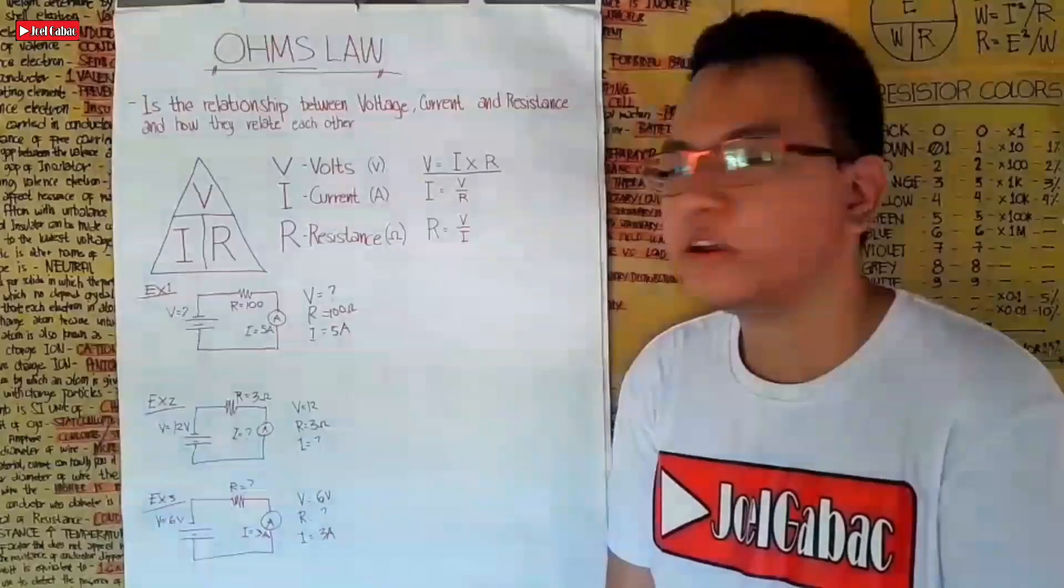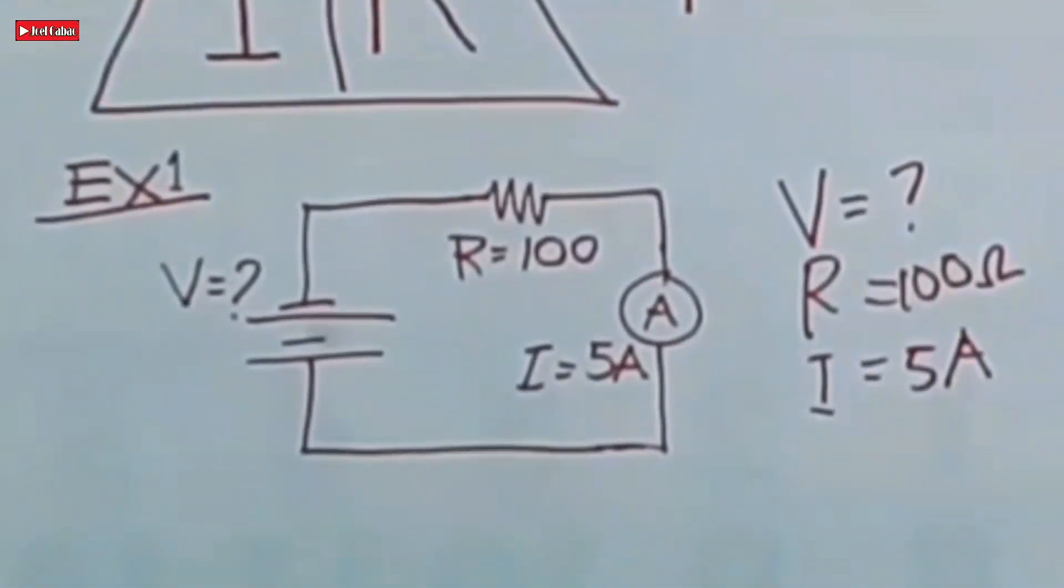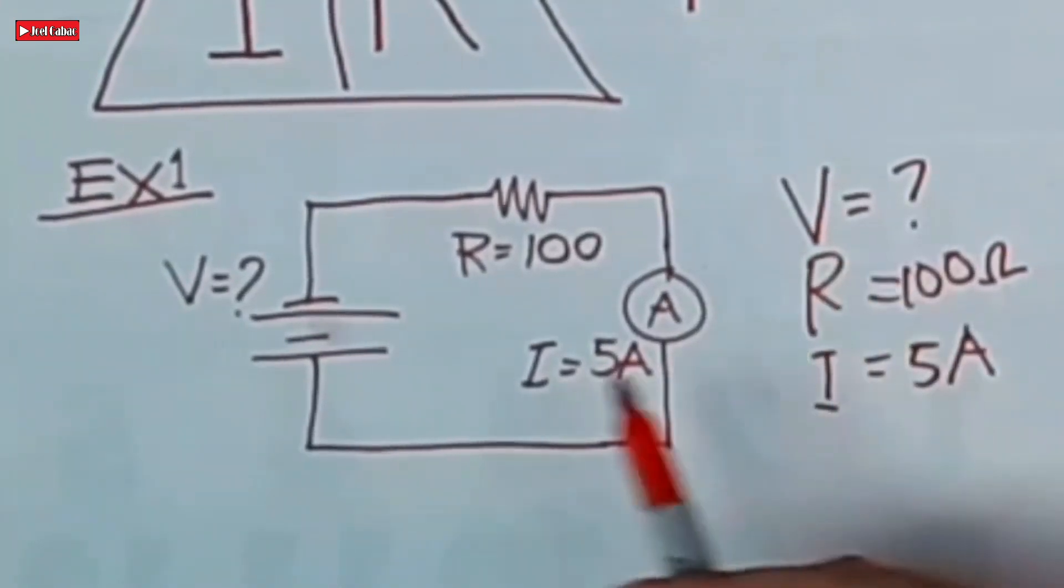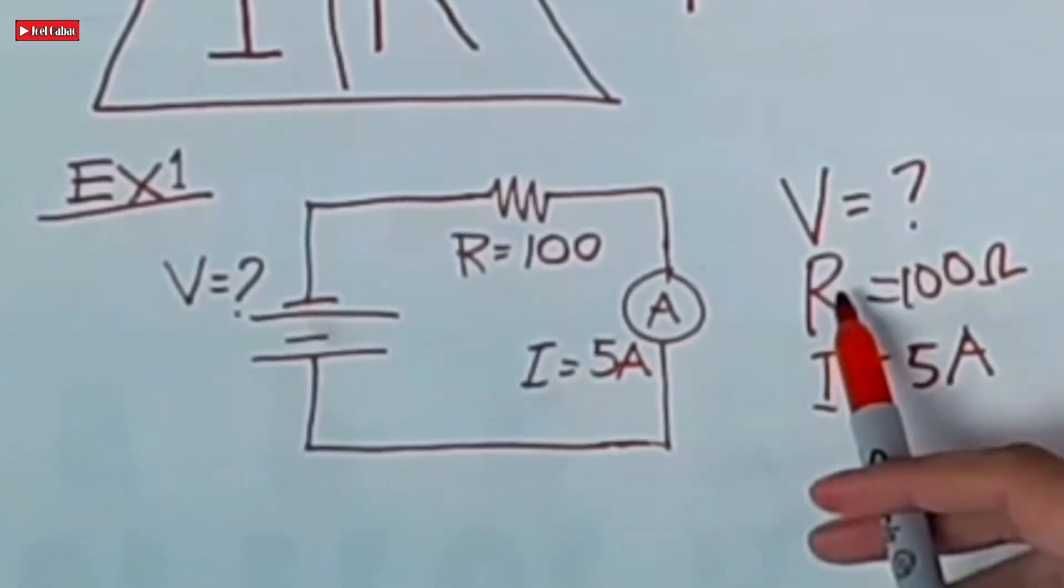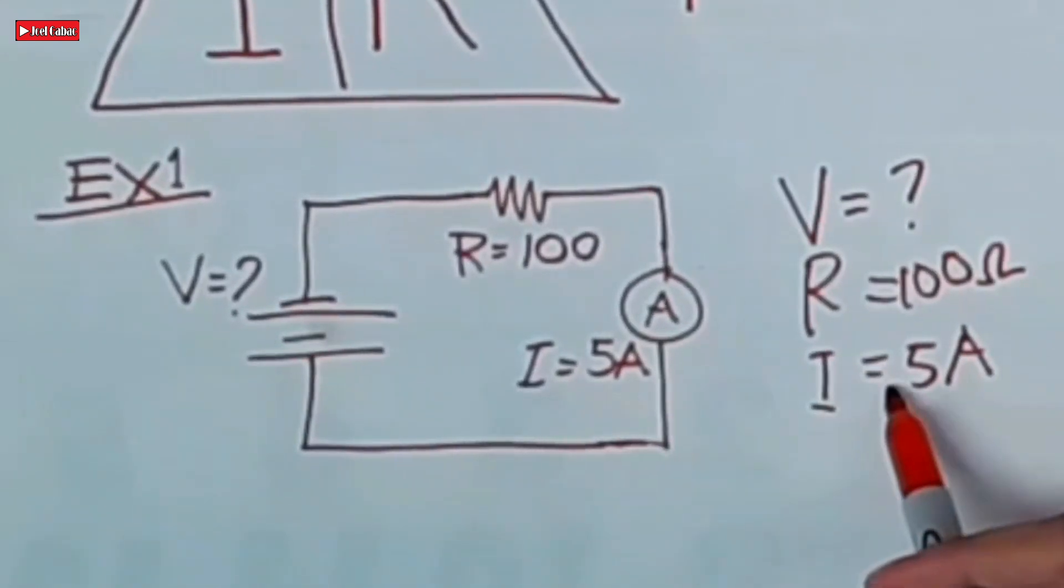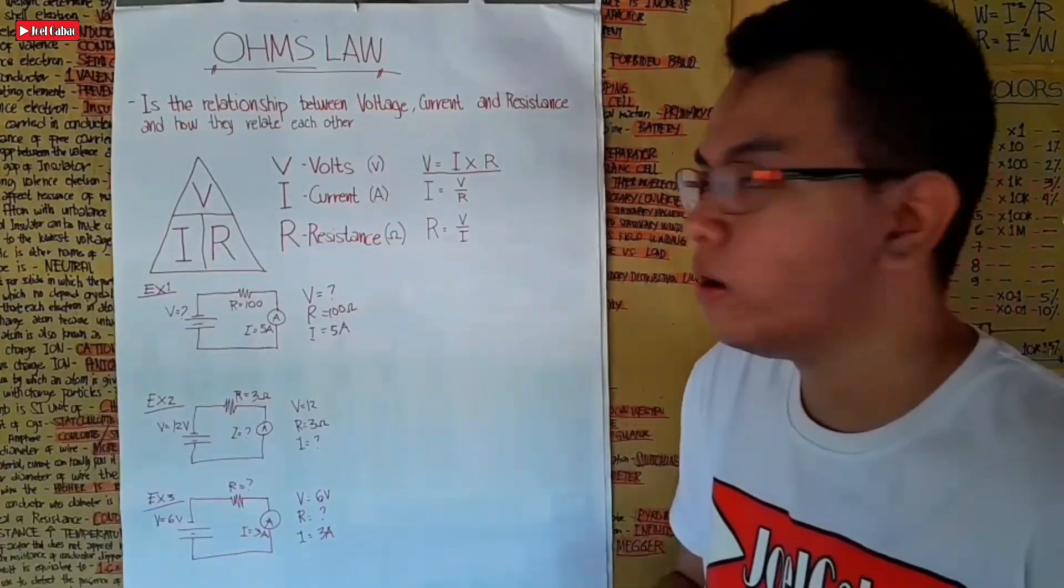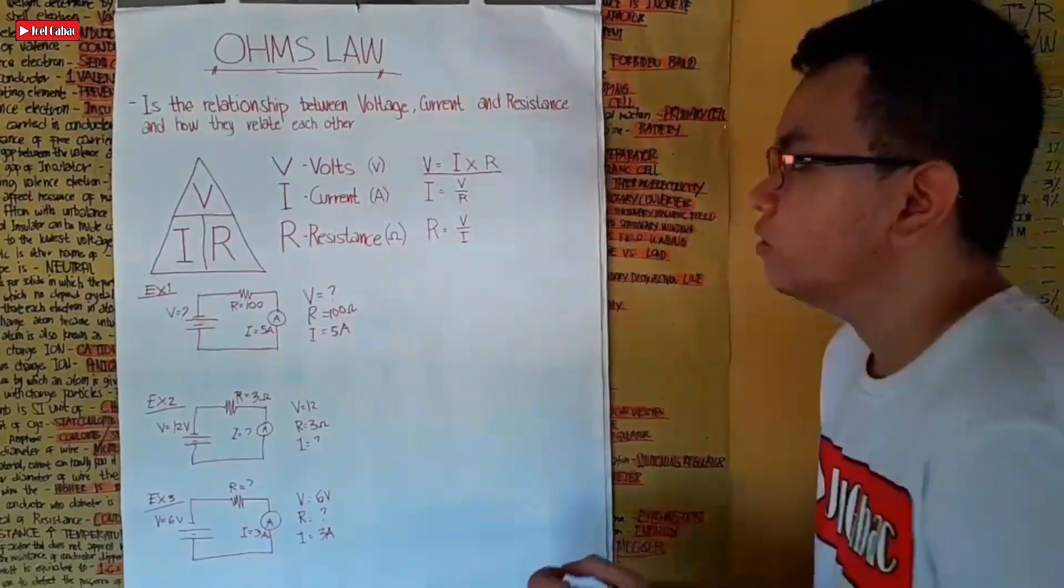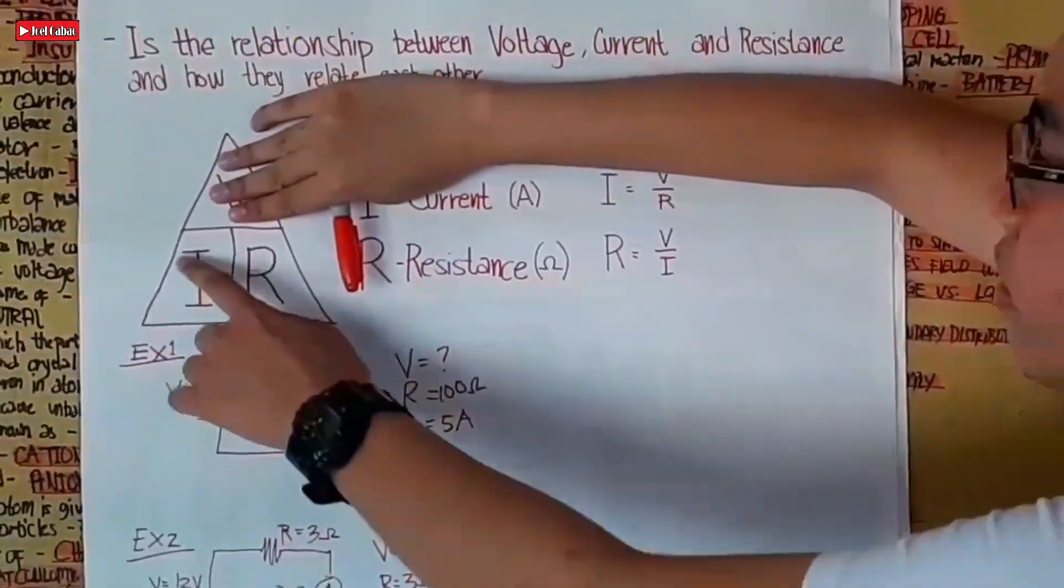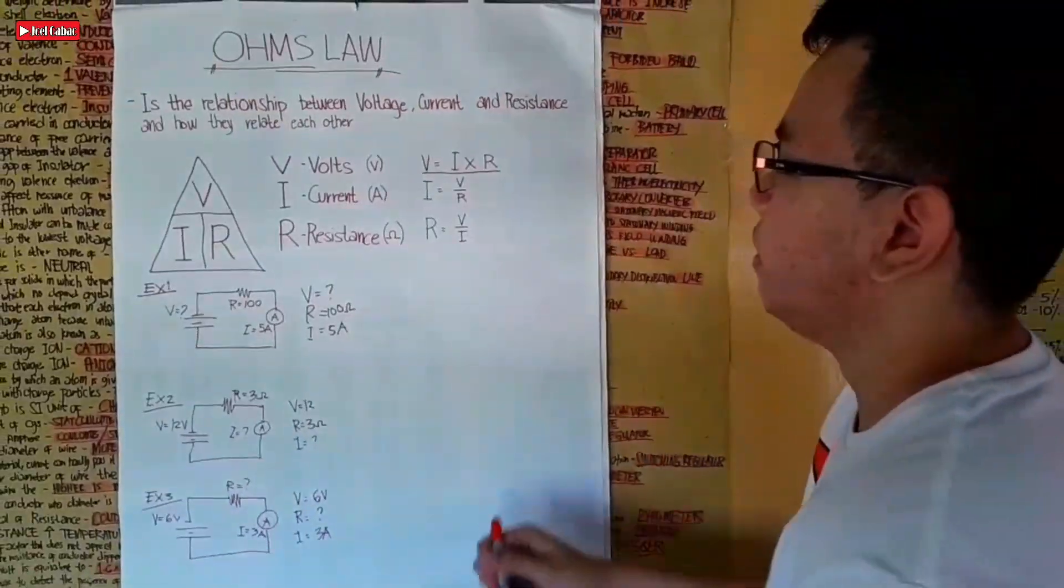Let's go to Example Number 1, where we need to find V voltage as the unknown. We have a resistance of 100 ohms and current of 5 amperes. Based on what we got, V is what we need to find, so V is equal to I times R. This is the formula.